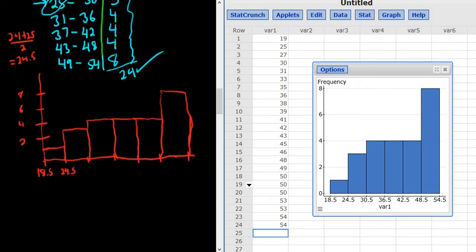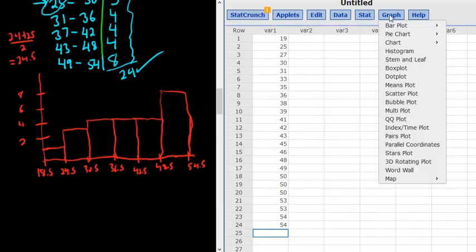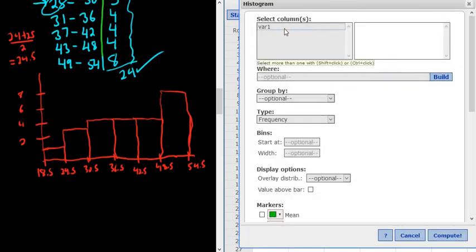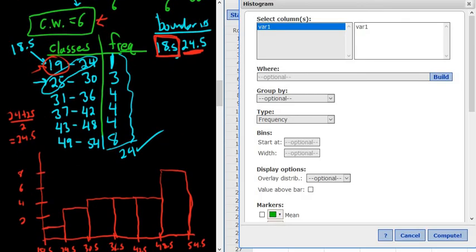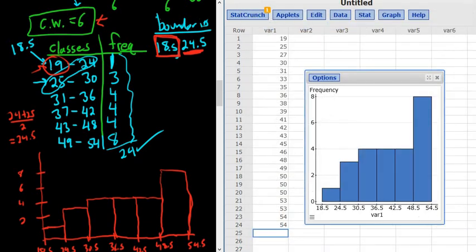So 18.5, 24.5, 30.5, 36.5, 42.5, 48.5, and then 54.5. So that's our beautiful histogram. Again, you go to Graph, Histogram, and then you click on var 1. You start at your first boundary. Remember, the first boundary, if you have whole numbers, you can just always subtract one half from the first number. So in this case, it's 19, so it'll be 18.5. That's the first lower class boundary. And the width, in this case, is 6. Just click Compute, and boom, there it is.